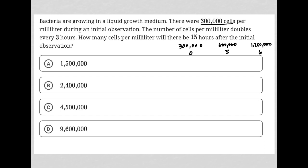I could just keep going with this pattern. So 2.4 million is what I expect to see at nine hours, and 4.8 million is exactly what I expect to see at 12 hours. Then double that would be 9.6 million, which is exactly what I expect to see at 15 hours. Therefore, the answer is choice D.